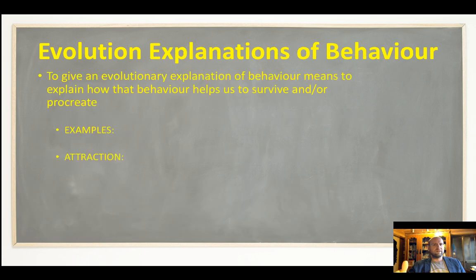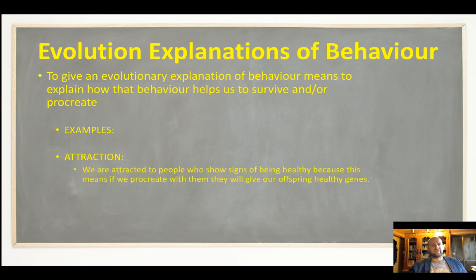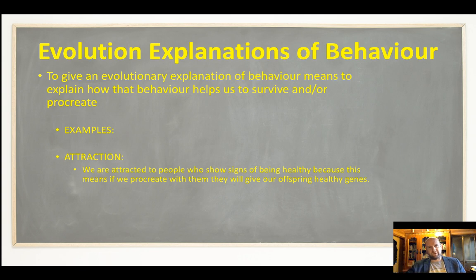Let's look at a couple of examples. One example is attraction. This is how we can explain a behavior from an evolutionary perspective because it helps us to procreate. A lot of research has shown that we've evolved to be attracted to people who show signs of good health and healthy genes. We want to procreate with these people because if we have babies with them, our offspring will also have healthy genes, giving them a higher chance of survival and therefore a higher chance of passing on our genetic material.